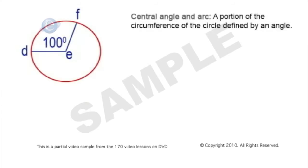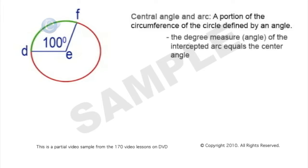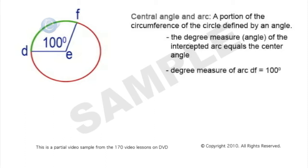A portion of the circumference of the circle is defined by the angle. In our example, we have an angle of 100 degrees and the arc we're talking about is arc df. The degree measure of the intercepted arc equals the central angle. So arc df, being made by an angle of 100 degrees, has a length of 100 degrees. We can measure the arc in degrees, and it's equal to the central angle that creates that arc.